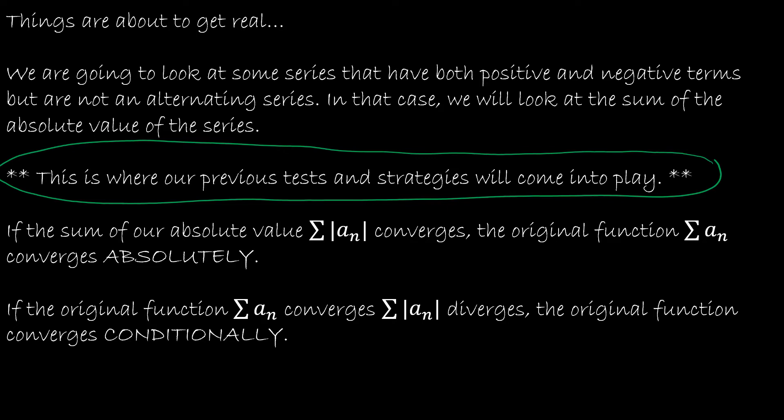Here's the new stuff. If the sum of the absolute value converges — and we're taking the absolute value because we have both positive and negative terms — then our original function also converges and converges absolutely. However, if the original function converges but the absolute value diverges, then the original function is said to converge conditionally.